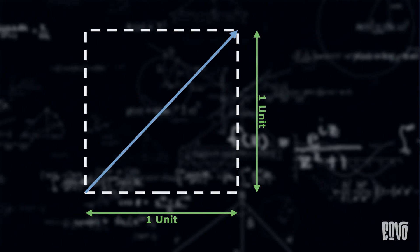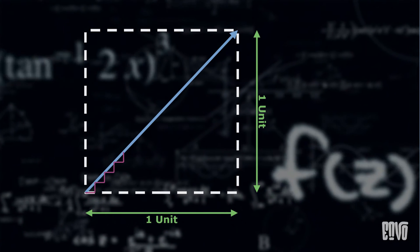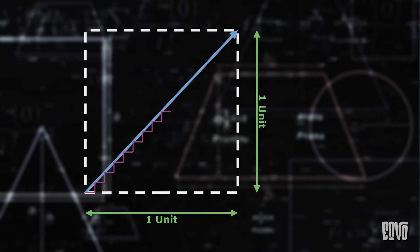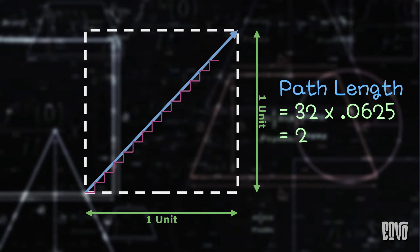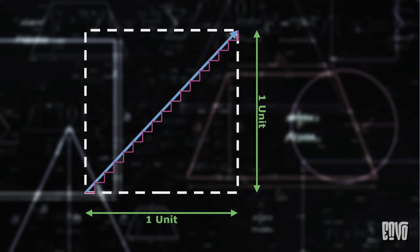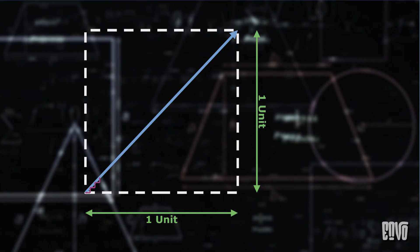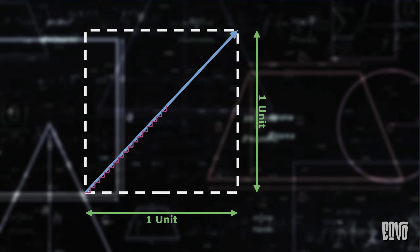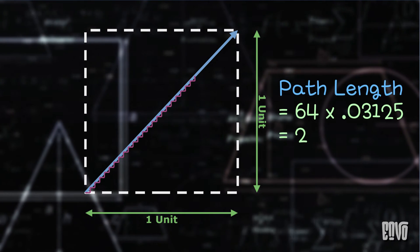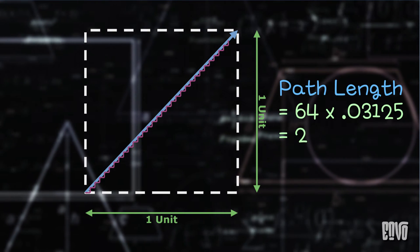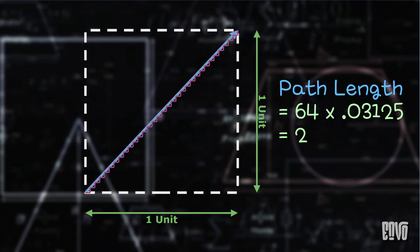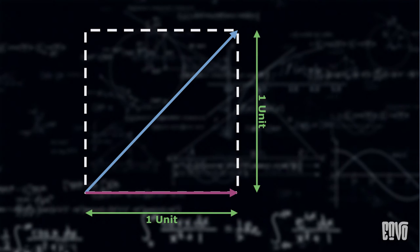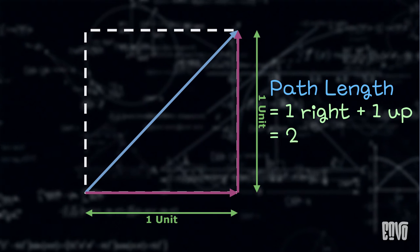Our intuition screams, this staircase must converge to the diagonal, and its length must converge to square root of 2. But here's the kicker. No matter how many steps you take, no matter how small each individual segment becomes, the total length of the staircase always remains 2 units. You're always covering the full horizontal distance of 1 unit, and the full vertical distance of 1 unit.